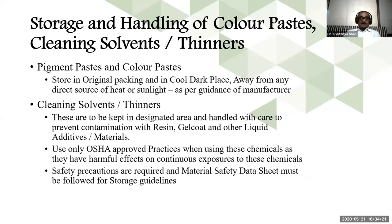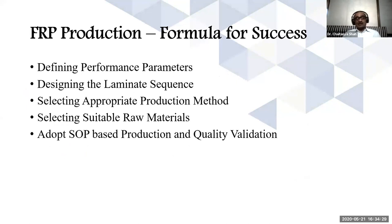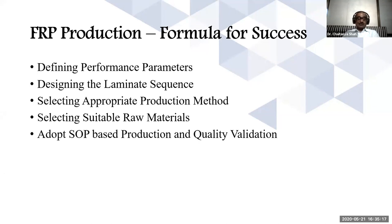Cleaning solvents and thinners require similar preparation steps. Coming to FRP production: it needs to start right — good preparation all the way to getting the end product perfect. The formula for success is: defining performance parameters, designing the laminate sequence, selecting the appropriate production method, selecting suitable raw materials, and SOP-based production and quality validation.